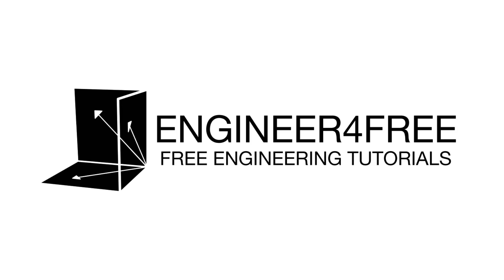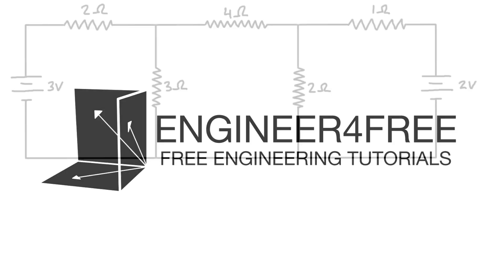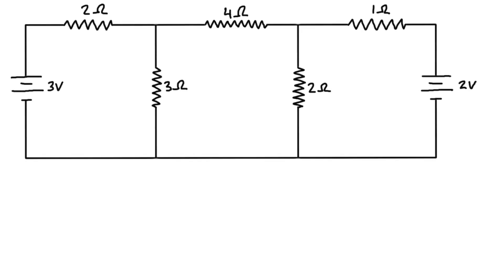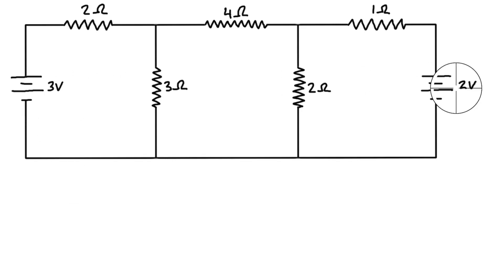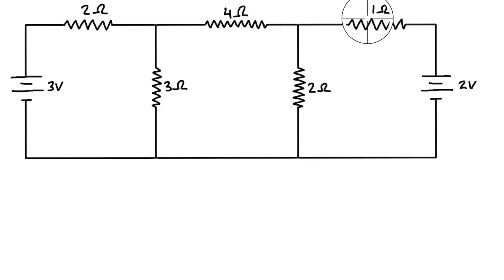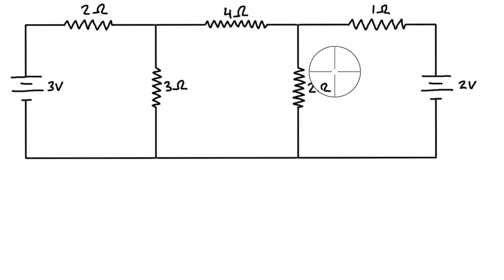Welcome back. We're doing another example on nodal analysis. In this case we have two voltage sources — a three volt and a two volt voltage source — and a couple of different resistors in no particular order. To solve this problem we're going to use nodal analysis.